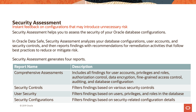Security Assessment generates four reports. First, comprehensive assessments, which includes all findings for user accounts, privileges and roles, authorization control, data encryption, fine-grained access control, auditing, and database configuration. Second, security controls, which filters findings based on various security controls. Third, user security, which filters findings based on users, privileges, and roles in the database. And finally, security configurations, which filters findings based on security-related configuration details.